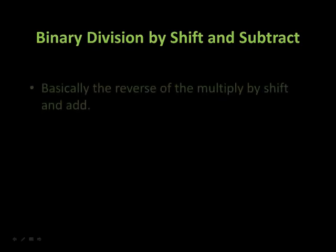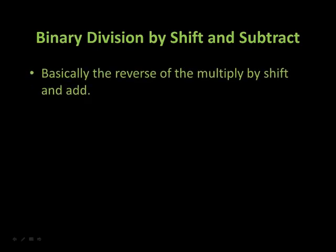Binary division by shift and subtract is basically the reverse of multiply by shift and add. For our first step, we will set the quotient to zero.